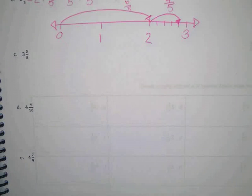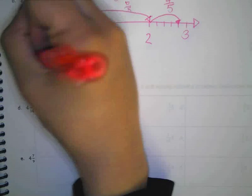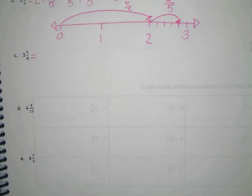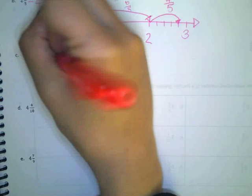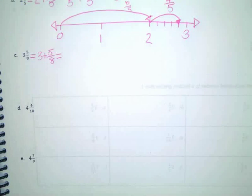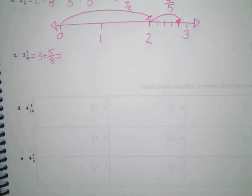3 and 5 eighths. 3 and 5 eighths is equal to what? Break it apart. 3 plus 5 eighths. Easy peasy, right? What is 3 equal to in eighths?